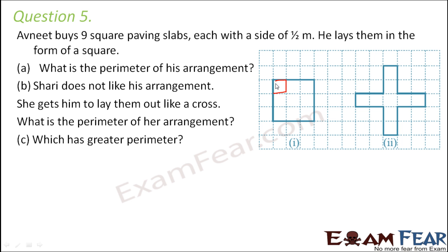So that means if you consider one of these squares, its side is half meter. So this is half meter. Again this length would be half meter. Again this length would be half meter. Now he has laid these 9 squares such that all of these together form a bigger square. So you have to find out the perimeter of this bigger square.